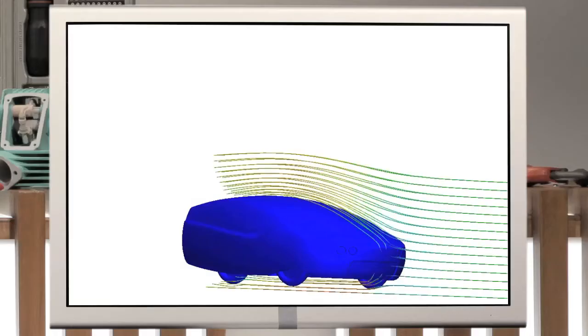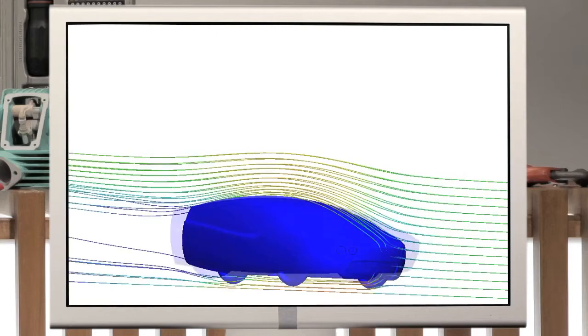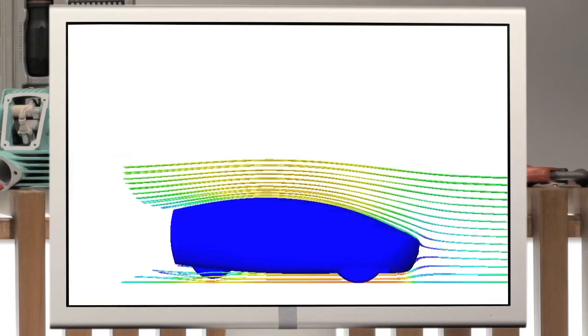Most cars have a drag coefficient of about 0.3, while a streamlined car might have half that. You can improve the shape, but the equation tells us that the most effective way to reduce losses from drag is to reduce speed. Since velocity is cubed, doubling velocity means eight times more power lost to drag.